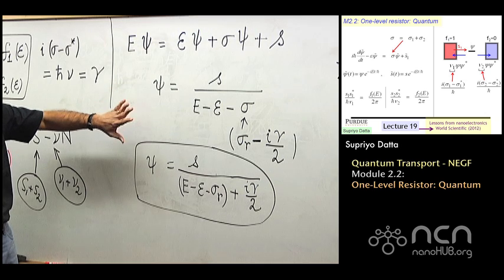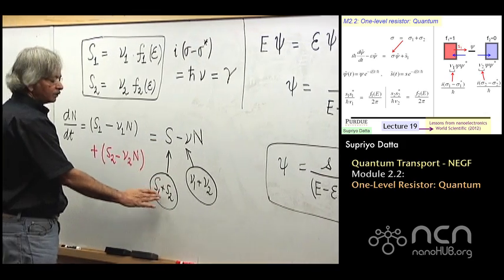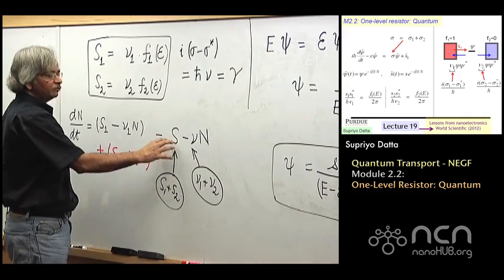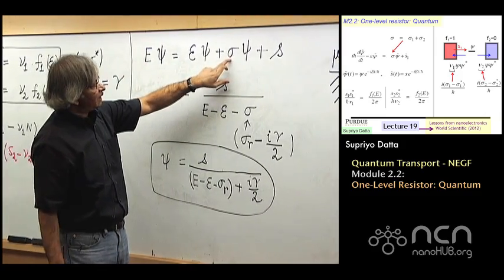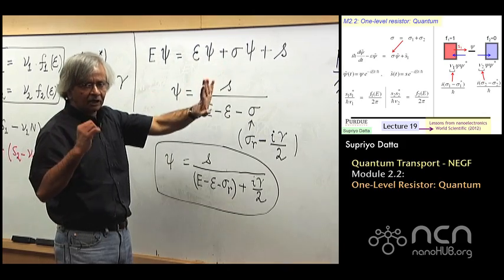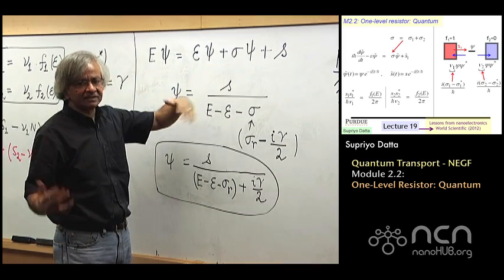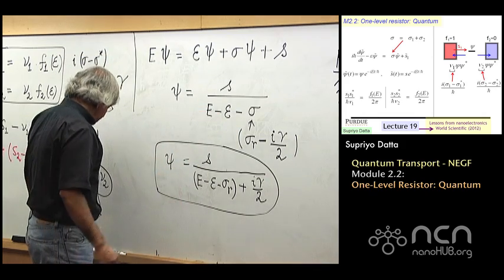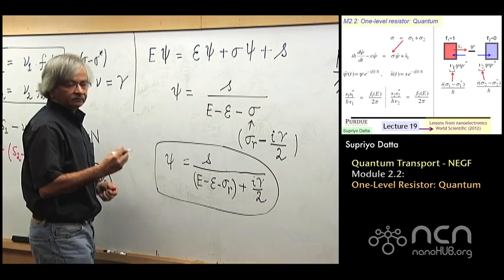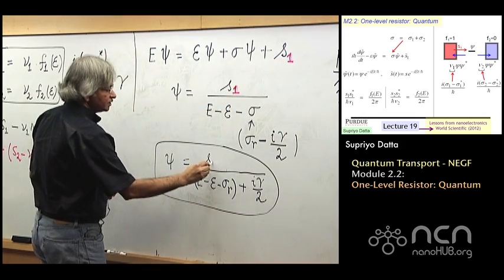When we did the semi-classical picture, everything had a 1-component and a 2-component, and the sum is what I write without subscripts. The same here: when I write sigma, there's sigma_1 and sigma_2 — one due to contact 1, one due to contact 2 — and writing just sigma means the sum of the two. Similarly for the source term: for the moment let's say we are just talking about the source term from contact 1, so this is really just S1.